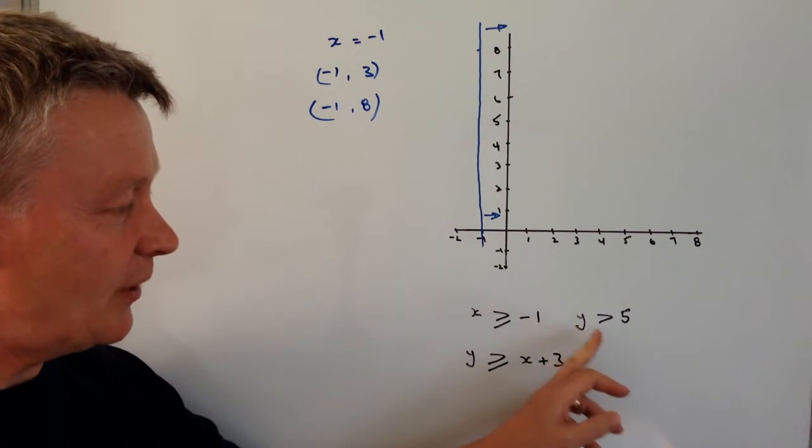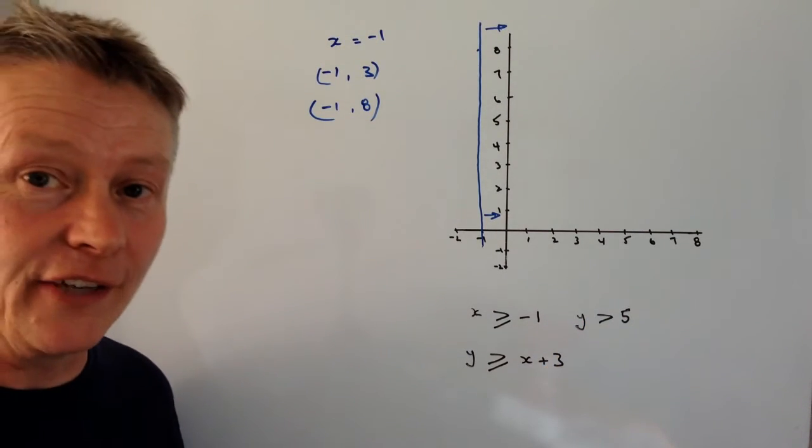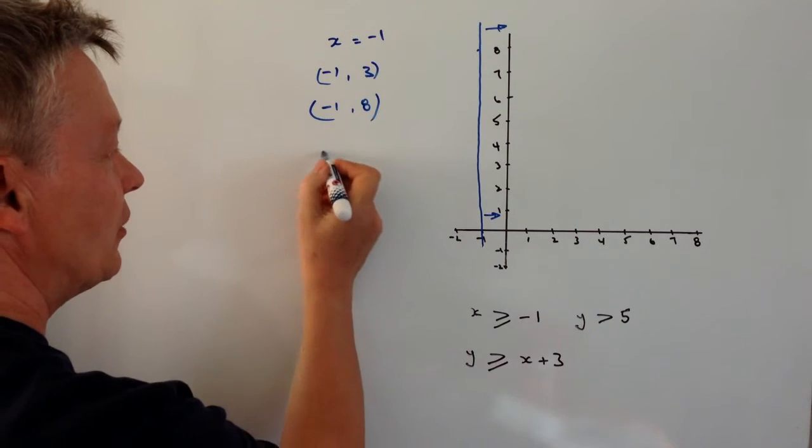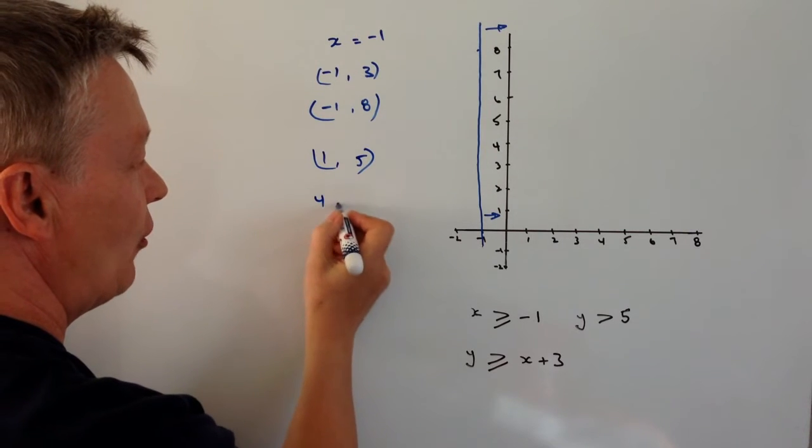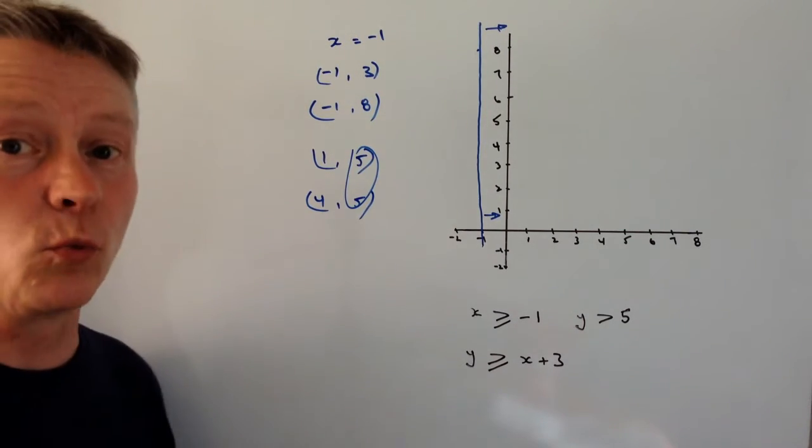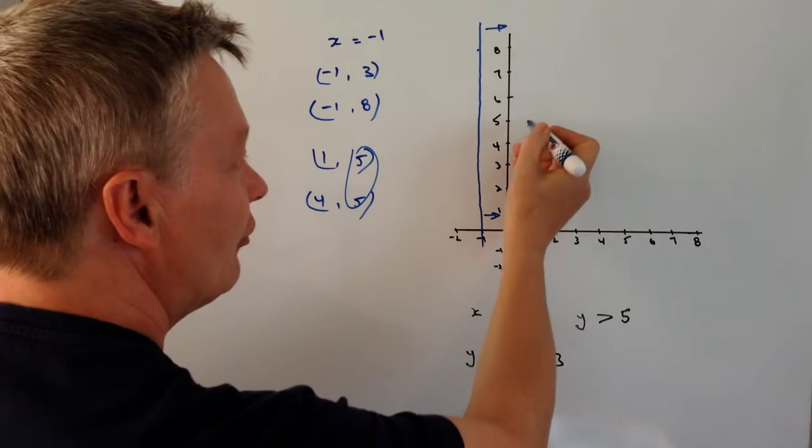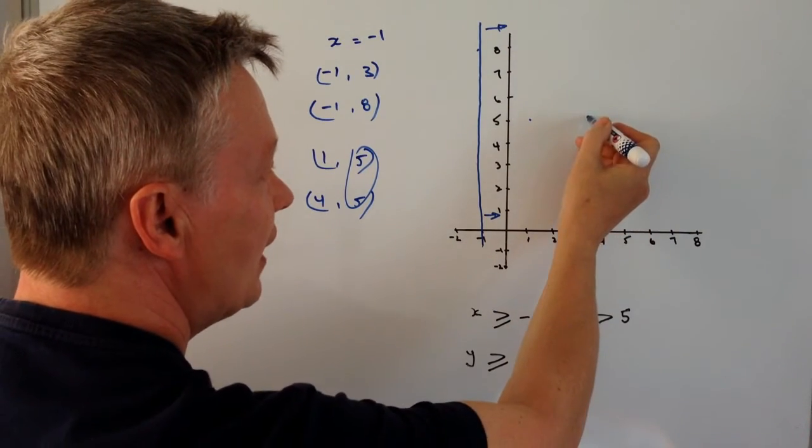OK, this one here we've got Y is greater than 5. Well, the line where Y equals 5, we could do the same exercise. We could do 1, 5 and we could do 4, 5. Doesn't really matter because at those points Y equals 5. So we can plot those points: 1, 5 is here and 4, 5 is here.